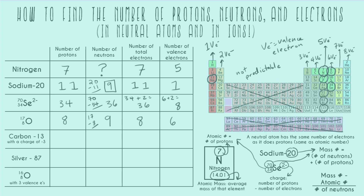Now we have carbon-13 with a charge of negative three. Looking up carbon on the periodic table — it's number 6 — so it has 6 protons. For neutrons: 13 minus 6 gives 7 neutrons. For total electrons, if it were neutral it would have 6 electrons, but with a charge of negative three it has an additional three electrons, so it has 9 total electrons. For valence electrons, carbon is normally in the fourth column giving 4 valence electrons, plus the extra 3 electrons gives 7 valence electrons.